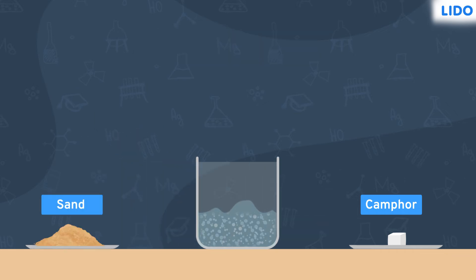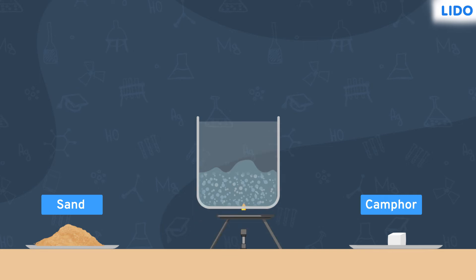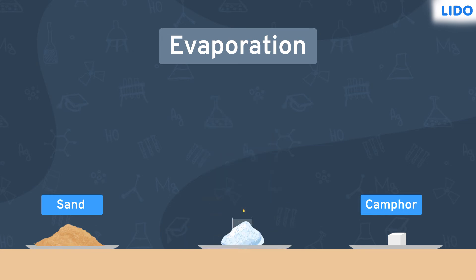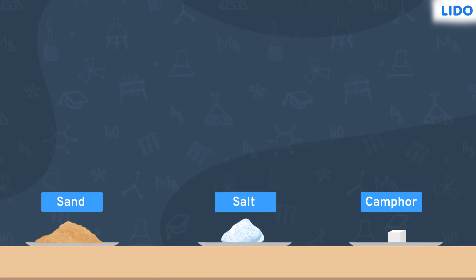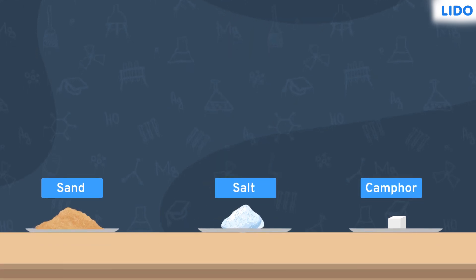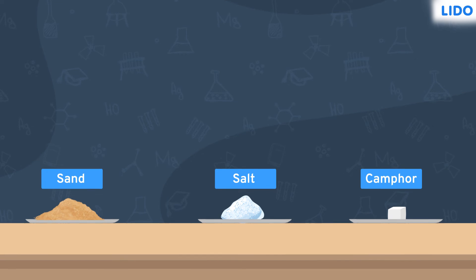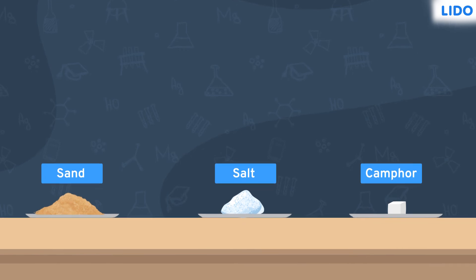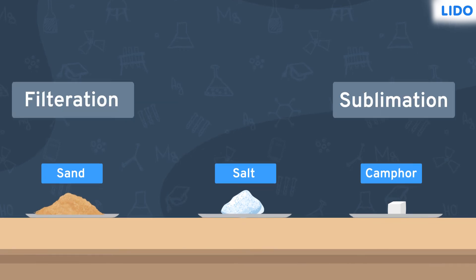Now from a solution of common salt in water, common salt can be obtained by evaporation, where we evaporate the excess water so that salt is left behind on the dish. For separating the different components of a mixture of ammonium chloride, common salt and sand, we can use the methods of sublimation, filtration and evaporation.